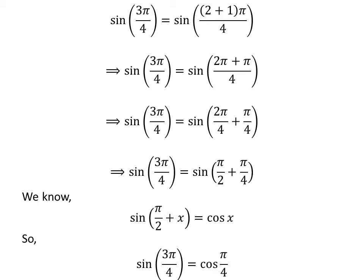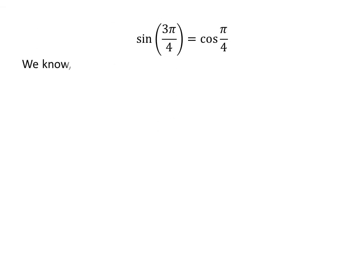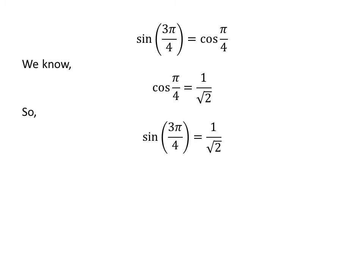Application of the above identity gives us sine of 3 times pi upon 4 is equal to cosine of pi upon 4. We know cosine of pi upon 4 is equal to 1 upon square root of 2. So, sine of 3 times pi upon 4 is equal to 1 upon square root of 2.